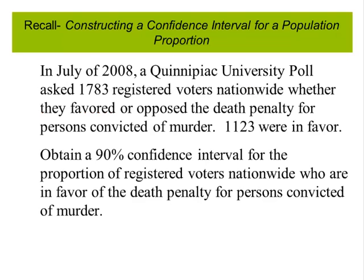Recall our example for the university poll that asked 1,783 registered voters nationwide whether they favored or opposed the death penalty for persons convicted of murder. 1,123 were in favor. Obtain a 90% confidence interval for the proportion of registered voters nationwide who are in favor of the death penalty for persons convicted of murder.